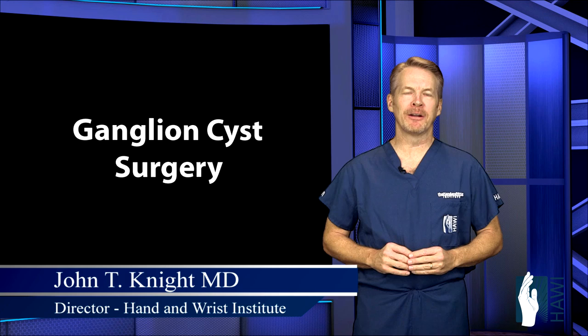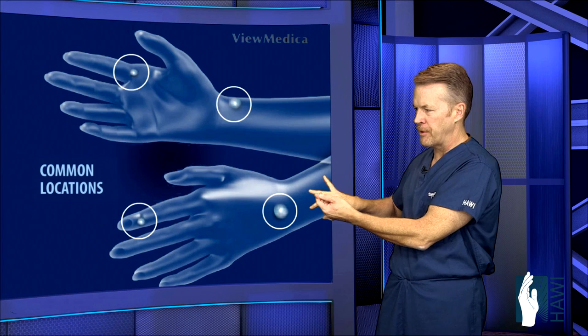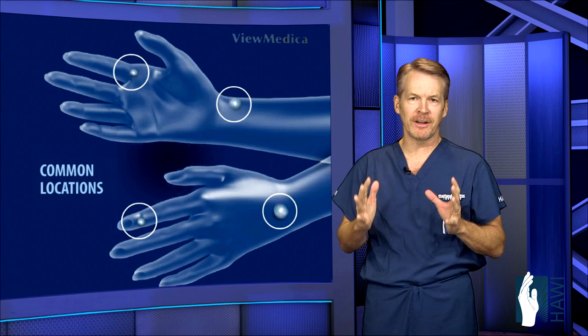Let's talk about ganglion wrist surgery. First, let's look at the locations of the cysts. Most common is around the wrist — on the top or dorsal side, the volar side, out the tip of the digit near the nail bed, and at the base of the finger. These are four common locations, but the most common is on the dorsal side or top of the wrist.